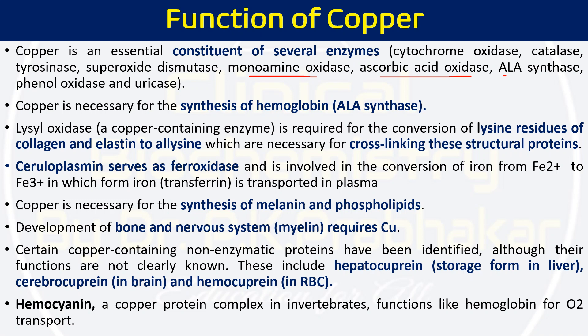Copper is necessary for the synthesis of hemoglobin via the enzyme ALA synthase. ALA synthase is responsible for heme synthesis — when we synthesize heme, it gives us hemoglobin. So for hemoglobin synthesis, we require ALA synthase, and this ALA synthase requires copper as a component. Therefore, copper is essential for hemoglobin and heme synthesis.